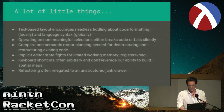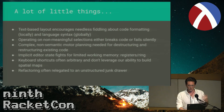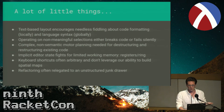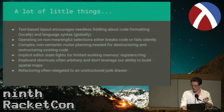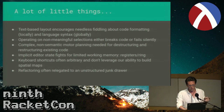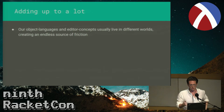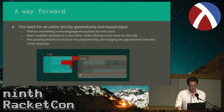Complex non-semantic motor planning is needed for destructuring and restructuring existing code. For the rest of us who are perhaps less coordinated, I like the idea of just painting on code, then turning it into what you want. Implicit editor state is a big one for me — I could have just stuck those components in a register, but I never remember what's there. Just put it on the screen and paint it colors. I feel that object languages and editor concepts live in different worlds, and Fructure is an attempt to push these things together.